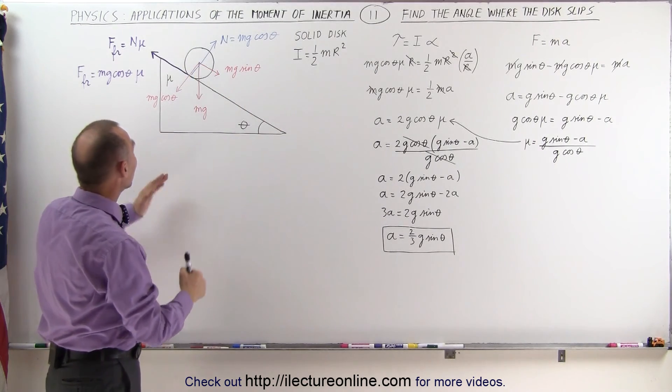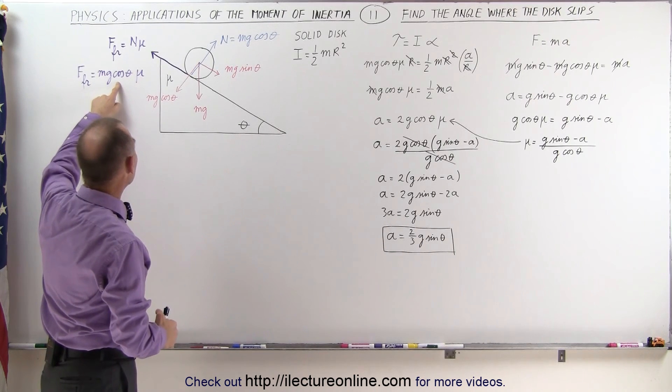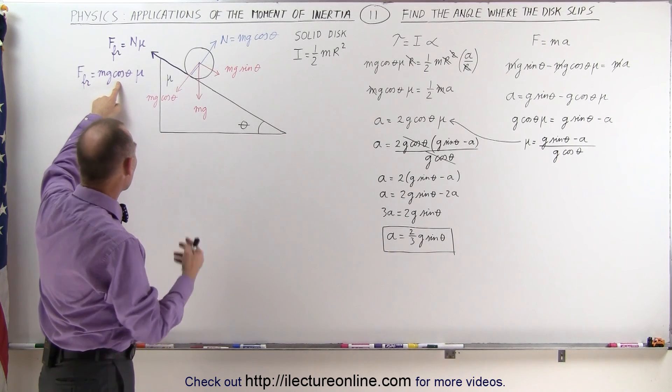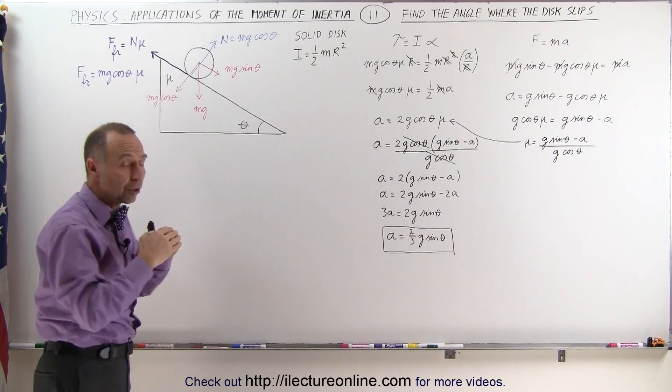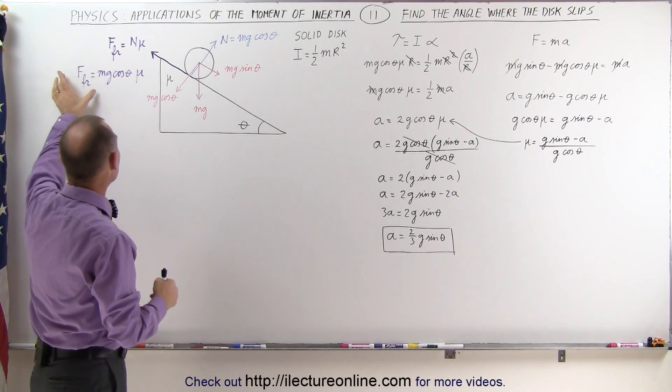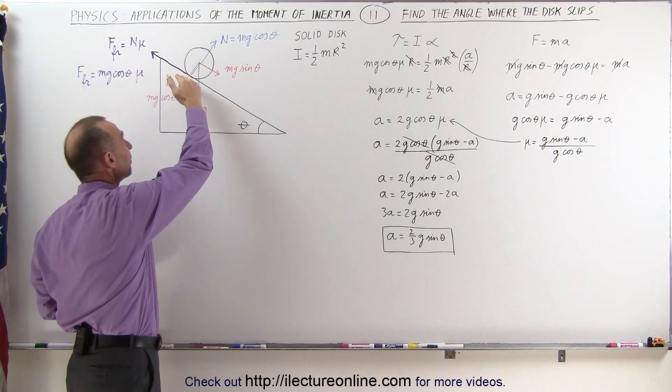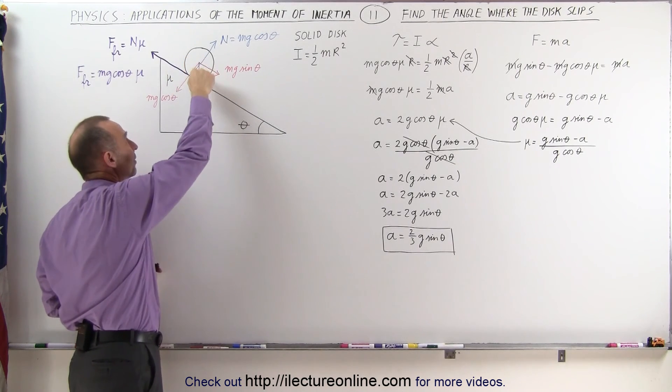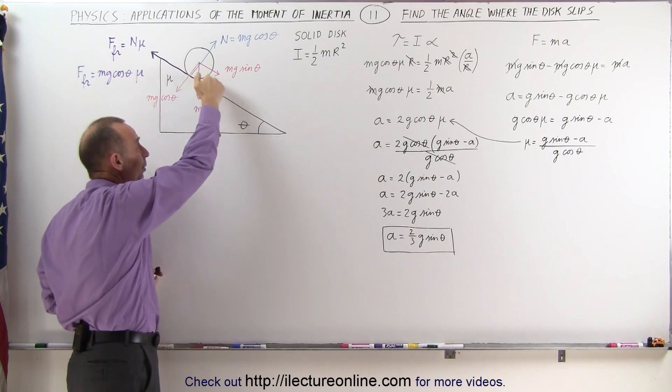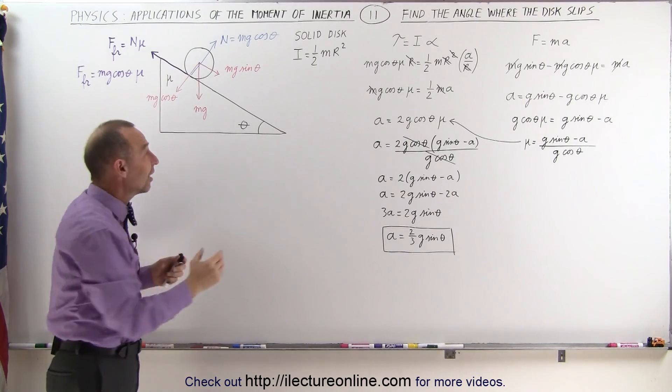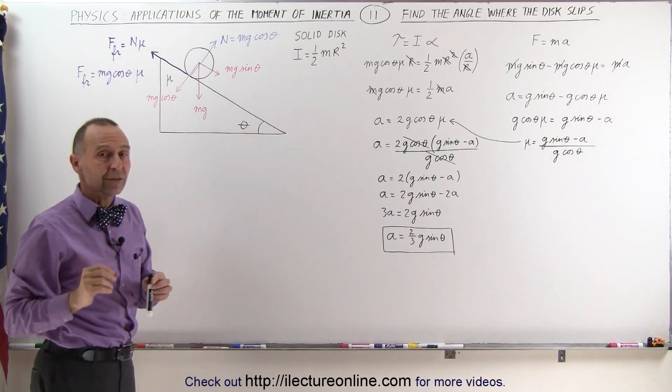The steeper it gets, the less the friction force becomes because the friction force is proportional to the cosine of the angle. The larger the angle becomes, the smaller the friction force, and at some point the friction force will not be sufficient to keep the cylinder rolling and the cylinder will begin to slide. The question is at what angle will this begin to happen?